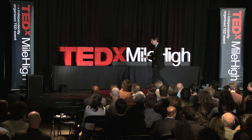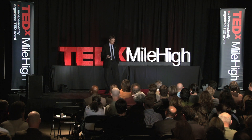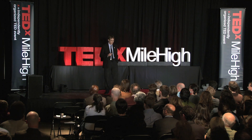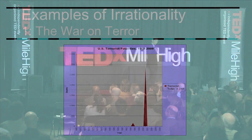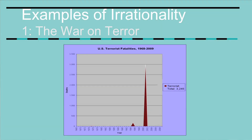My first example of political irrationality is the war on terror. This graph shows the number of fatalities due to terrorism in the United States from the RAND Corporation's database of terrorist incidents. There have been about 3,200 fatalities over the course of about 50 years. The big spike is the 9/11/2001 attack; this smaller spike is the Oklahoma City bombing, and there are a couple of other incidents too small to see on the graph.